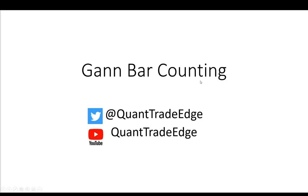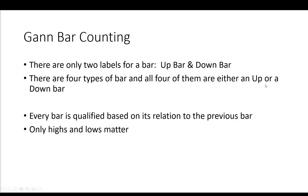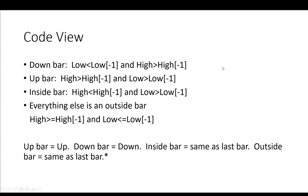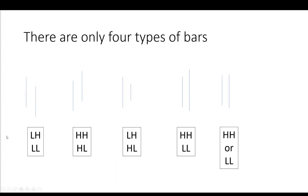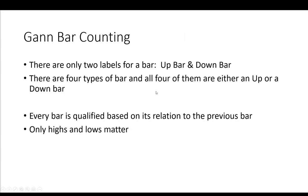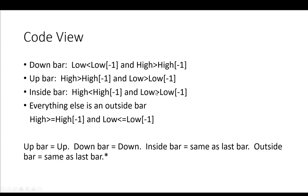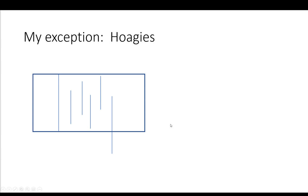So this is it — it's really quite simple. Generally we're just looking at whether something is an up bar or a down bar. There are four types of bars — a very clear down bar, a very clear up bar, and everything else takes the label of the previous bar. These are little coding mnemonics depending on what language you're going to code in, and that would help you get there. And my exception is the hoagies.